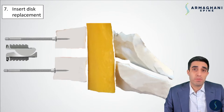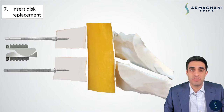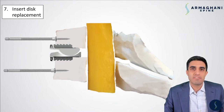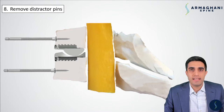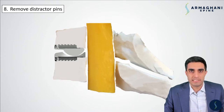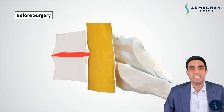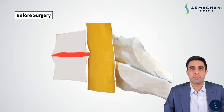Now that there's no more compression upon the spinal cord and the bone spurs as well as the disc have been completely removed and the disc space has been distracted to a normal height, we insert the disc arthroplasty device, which has been designed to fit your anatomy perfectly. We place that device in between the bones and then remove the distractor pins. With the disc arthroplasty device in place, there is no more compression of the spinal cord and all the bone spurs have been removed.